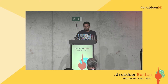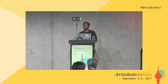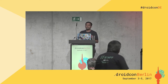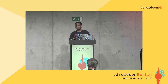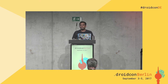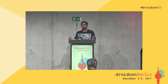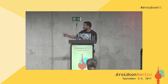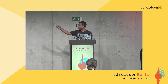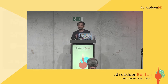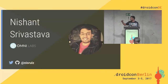Let me first introduce myself. I'm Nishant Shavasto. I am a software developer at Omni Labs. Our company is based out of Vancouver and San Francisco. It's a small startup that builds analytics and business intelligence tools for marketers. You can find me at my Twitter and GitHub handle — that's N-I-S-R-U-L-Z.